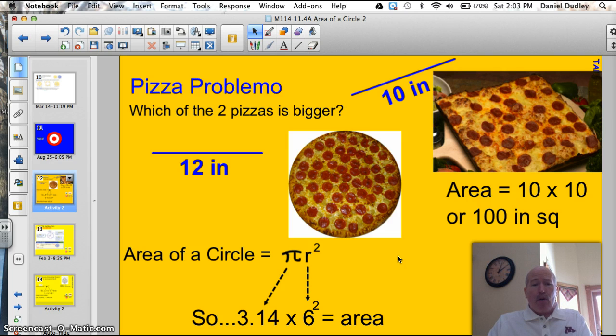The pizza problemo. We talk a little bit Italian. Which of these two pizzas is bigger? If you want to know which of these two pies is bigger, you've got to be able to find the area of a circle. Let's start with a square pizza. We know that a square, if it's 10 inches across this direction, it'll also be 10 inches across this direction too. So I've got four sides at 10. If I multiply the two sides, 10 times 10, my area is going to be 100 square inches.